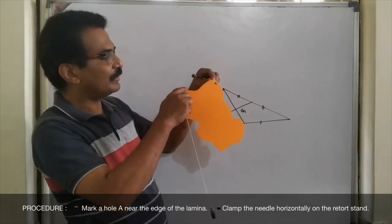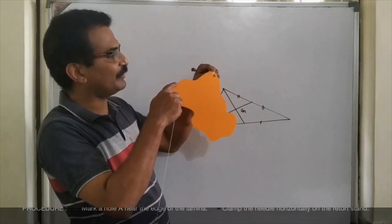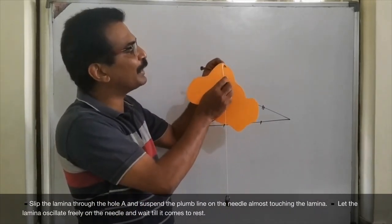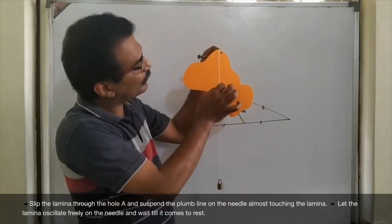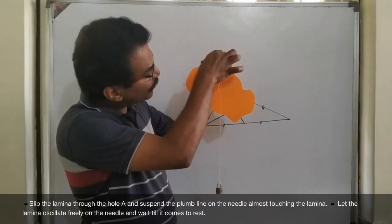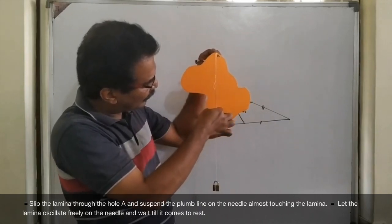Suspend it. Let it oscillate freely. Very good. Now, you will use this plumb line you made. And, center of gravity of the lamina is somewhere on this vertical line.